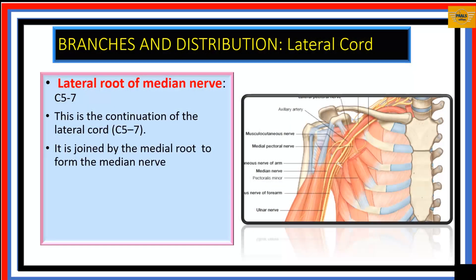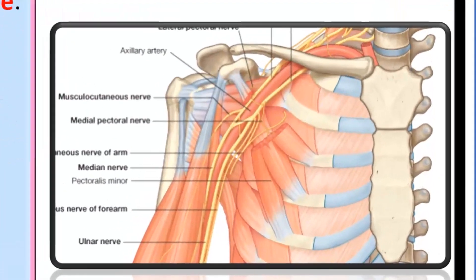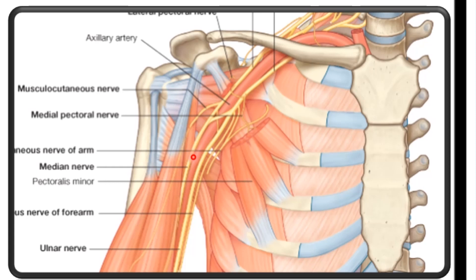The last branch from the lateral cord is the lateral root of the median nerve. The median nerve is formed by contributions from both the lateral cord and the medial cord. In the illustration, we see the lateral cord and medial cord, with the lateral root of the median nerve running as the continuation of the lateral cord. It combines with the medial root to form the median nerve.